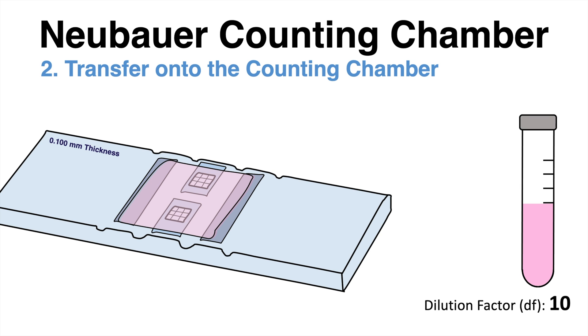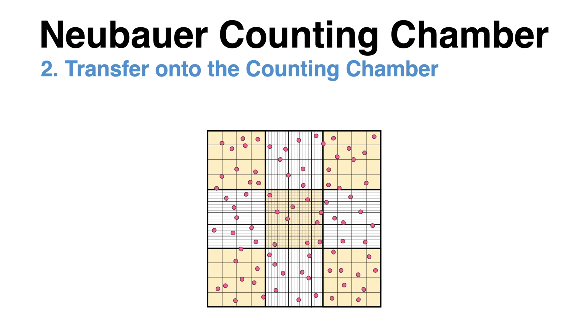Under the microscope the counting chamber looks like this. The red spots are cells and the 5 yellow squares serve as the counting area.